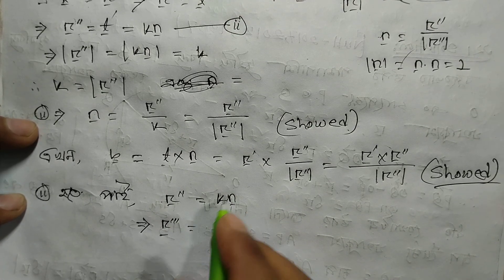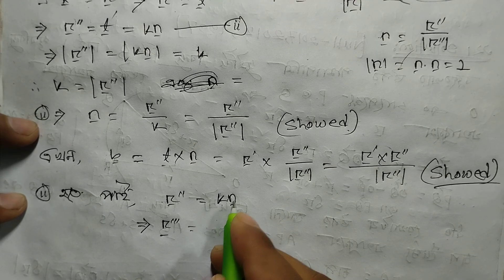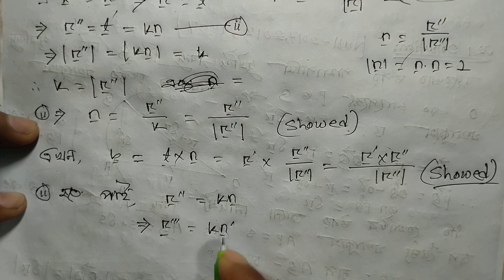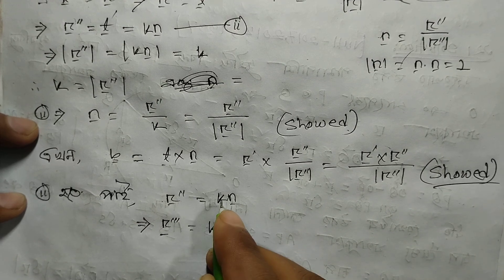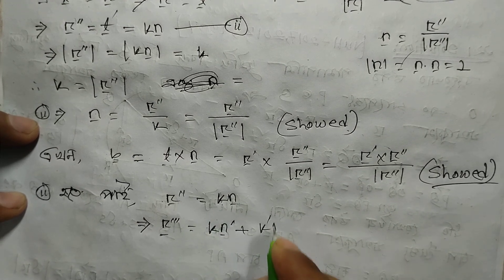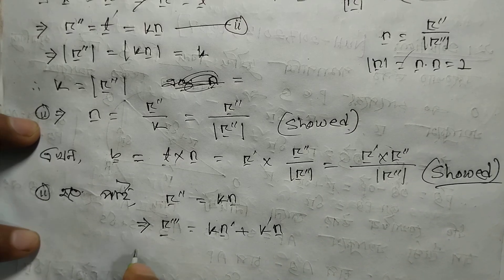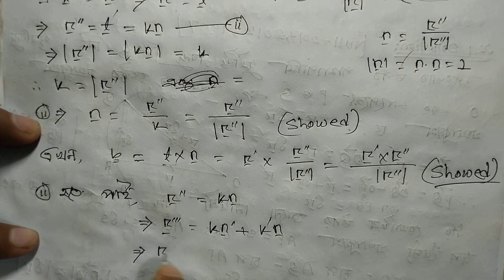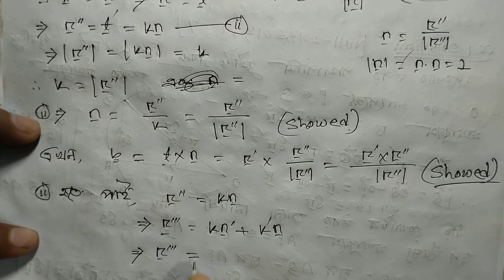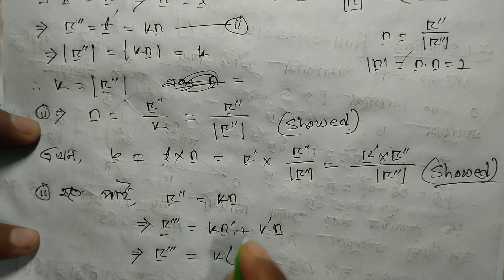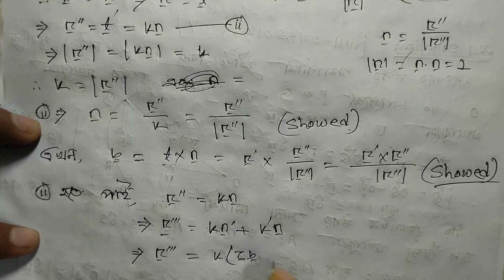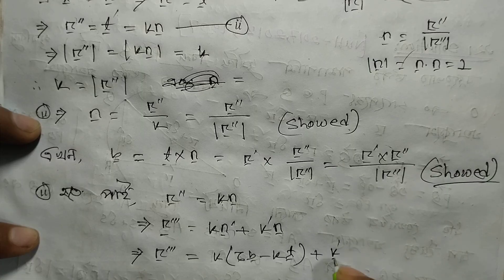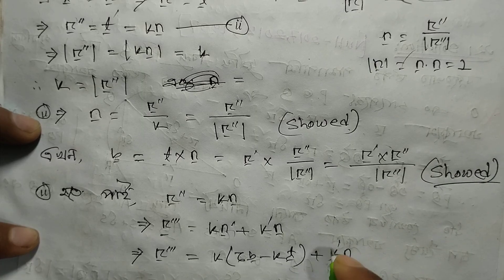Differentiating kappa times n — applying the chain rule — we get: kappa differentiated times n vector plus kappa times n prime vector. Now using the Frenet formula n prime = -kappa t + tau b, we substitute: r triple prime vector equals kappa prime n vector plus kappa times (minus kappa t plus tau b).